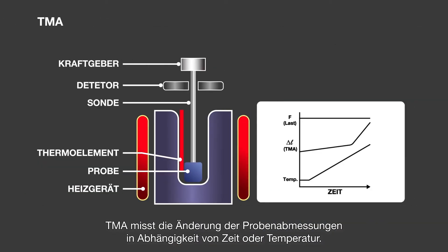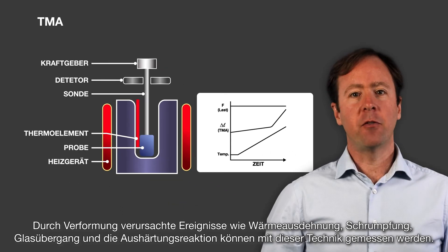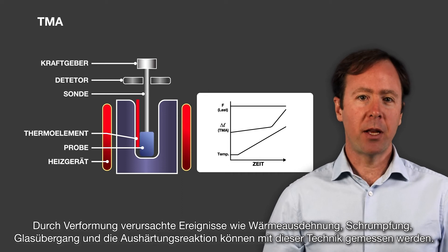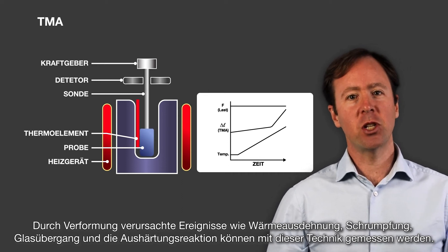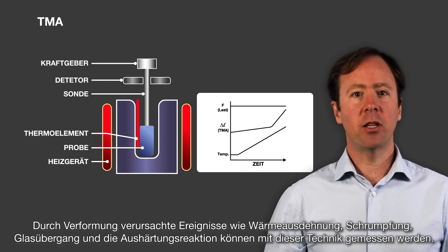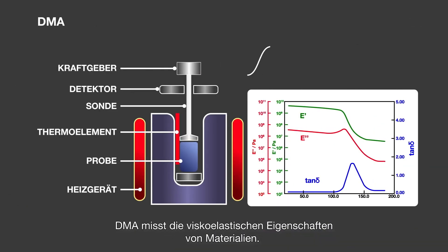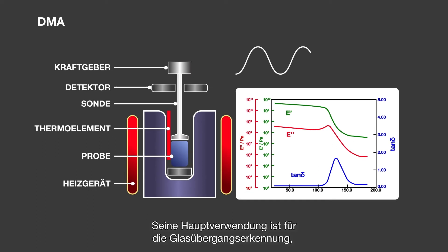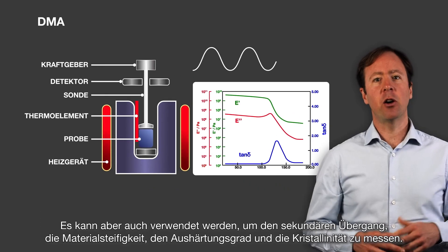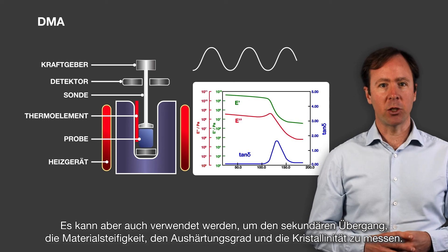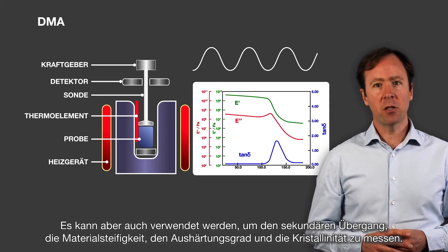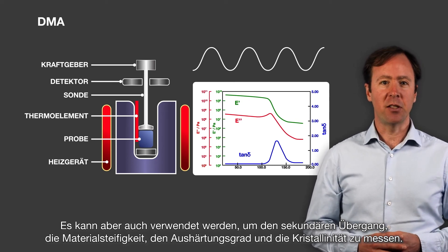TMA measures change in sample dimension as a function of time or temperature. Phenomena caused by deformation including thermal expansion, shrinkage, glass transition and curing reaction can be measured with this technique. DMA measures the viscoelastic properties of materials. Its main use is for glass transition detection, but it can also be used for measuring secondary transition, material stiffness, curing level and crystallinity.